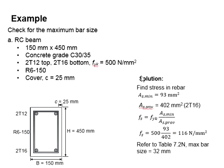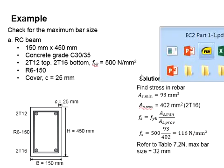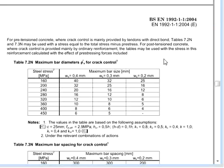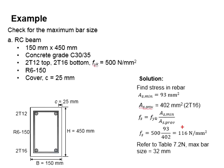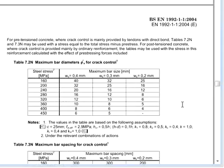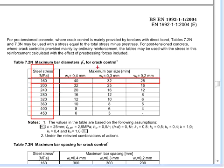Next, you need to refer to table 7.2N in Eurocode. It is found that the stress in the bar is 116 and the minimum stress here is 160. You are looking at the crack width of 0.3 mm.